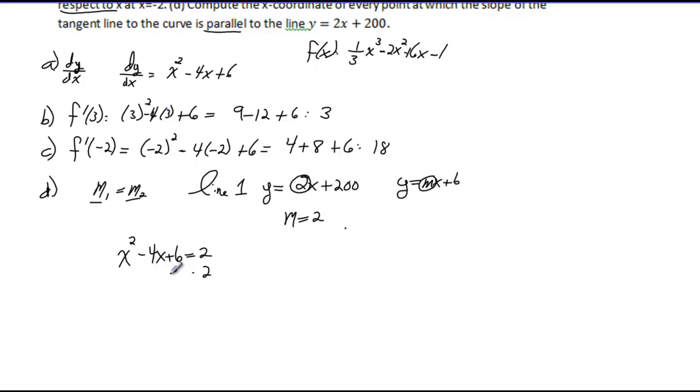To solve this quadratic, we subtract 2 from both sides to get x squared minus 4x plus 4 equals 0.